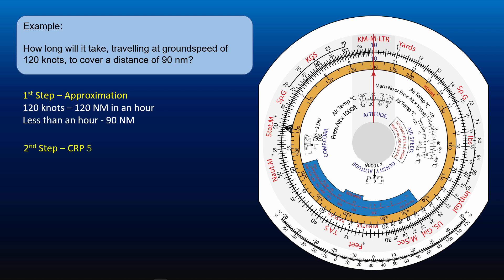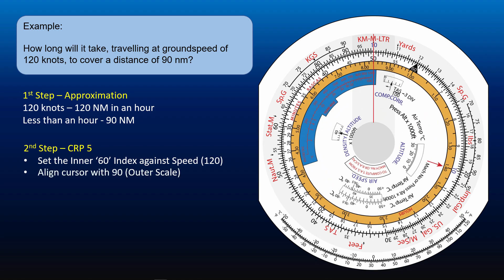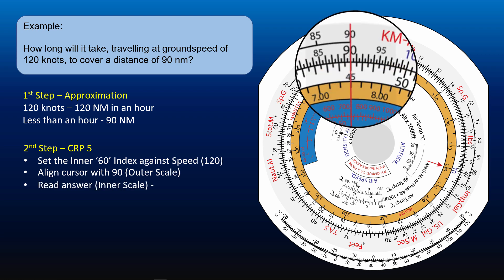The second step, we use CRP5 to get the answer. Set the 60 index on the inner scale against speed 120 knots. Align the cursor with 90 on the outer scale. 90 represents the distance. Now we can read the answer on the inner scale against 90. 45 minutes.